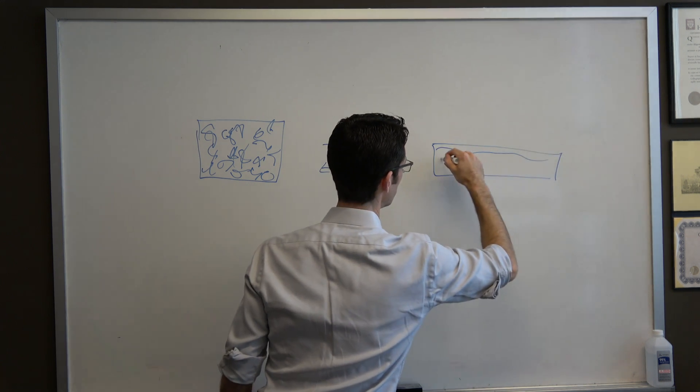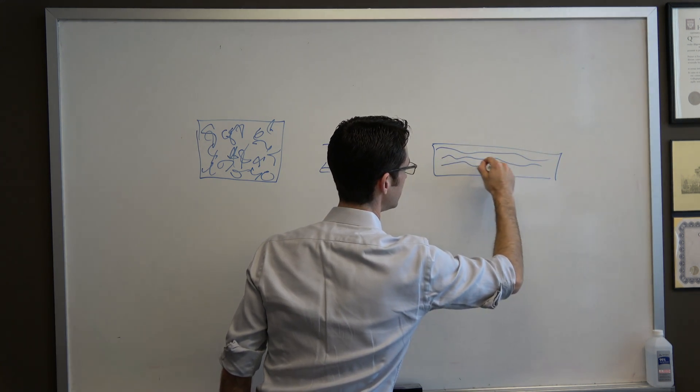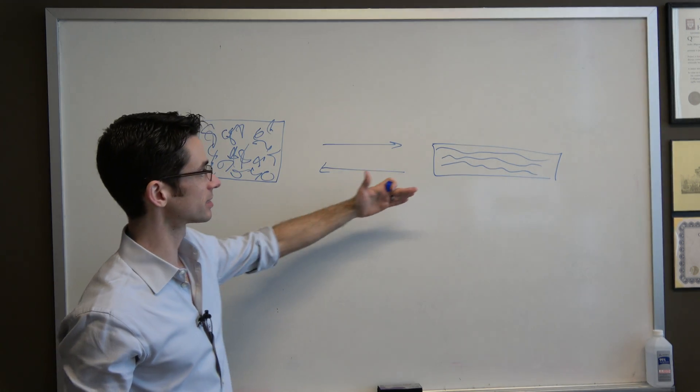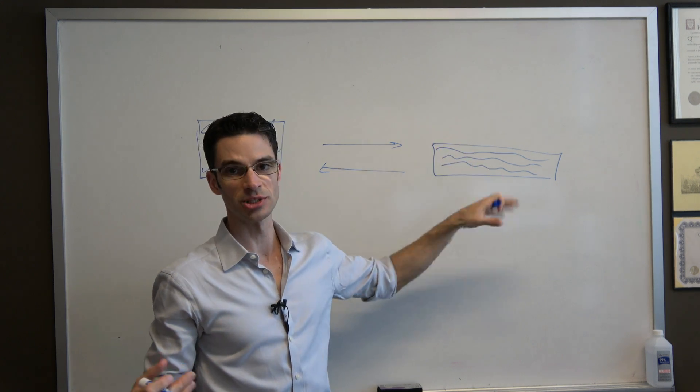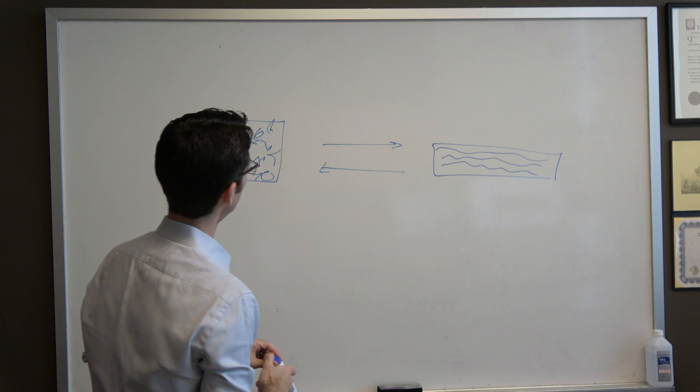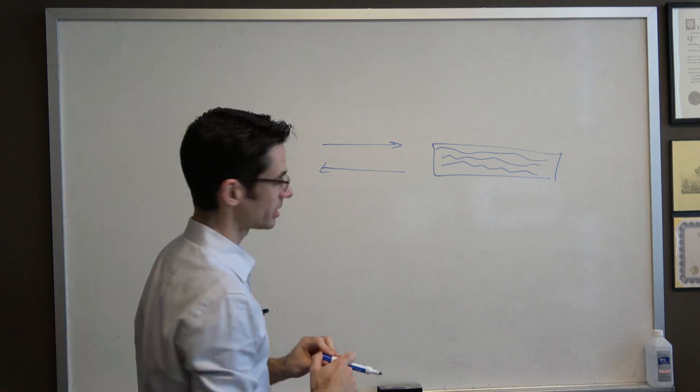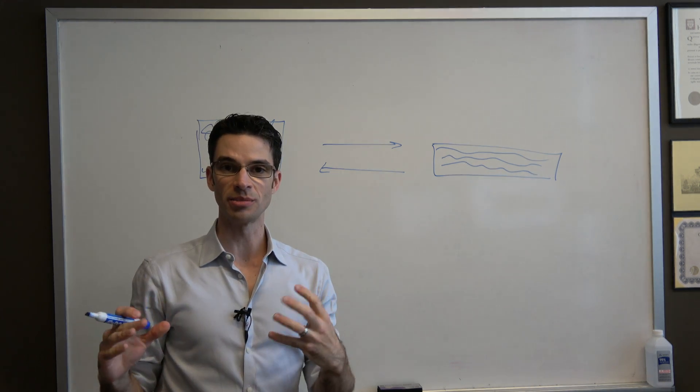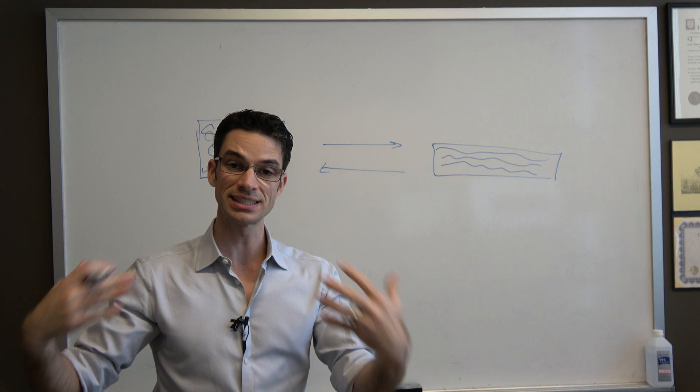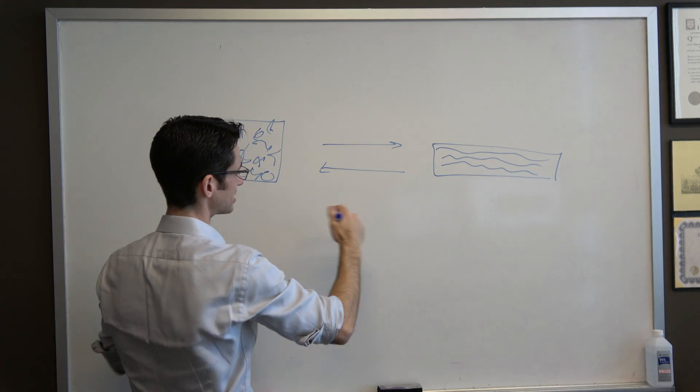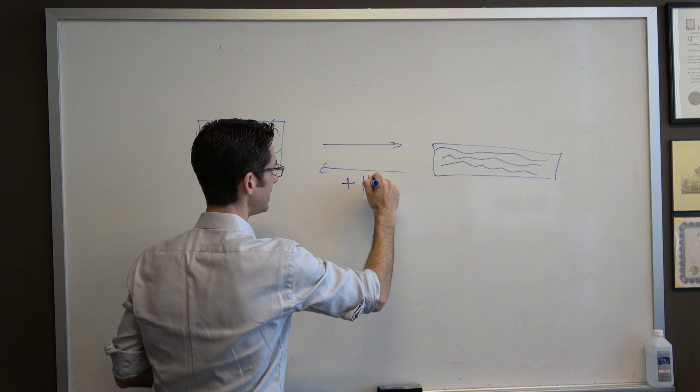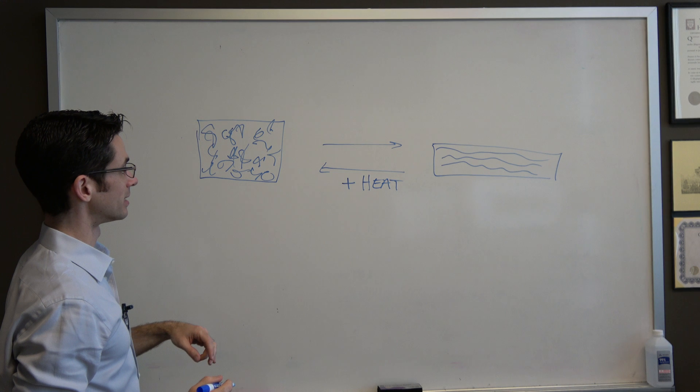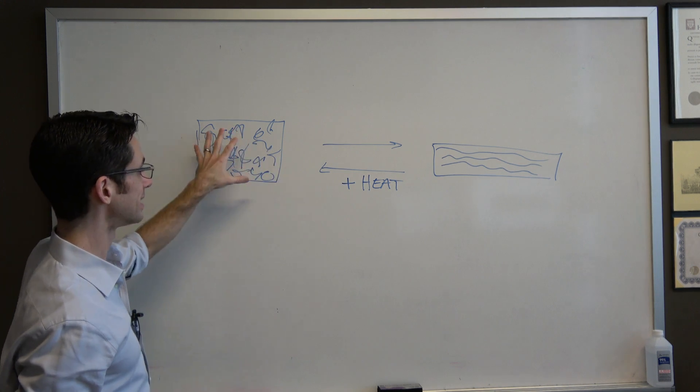In the stretched state we've reduced the entropic degrees of freedom. We've reduced the number of statistical states available to these polymer chains. We know that in order to get from this state to this state by statistical arguments, to populate these states we need to add heat.